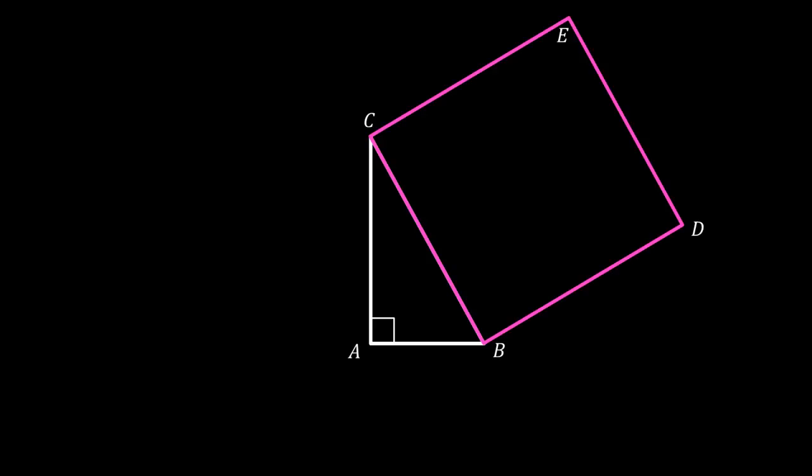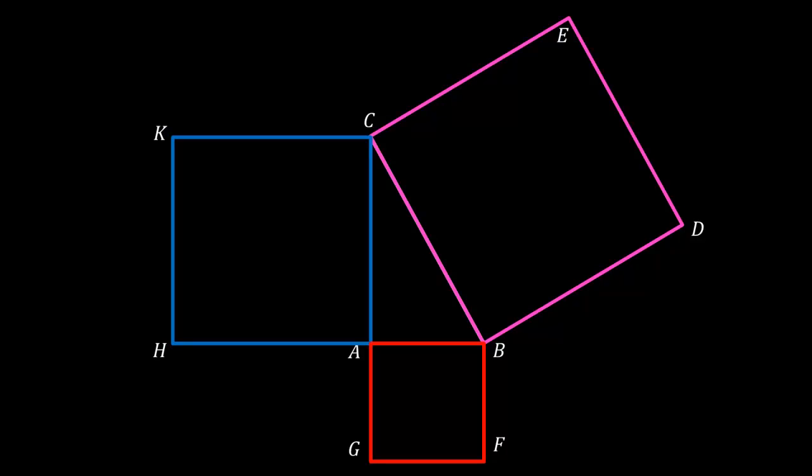We can construct the pink square BE, which is just the square of the hypotenuse. Euclid had a particular method to do this using only a straight edge and compass, but for the sake of keeping our diagram simple, we will just assume this is possible. We can use the same method to construct the other two squares, AF and AK, here shown in red and blue, respectively. Now we have our setup, and we can start the proof.